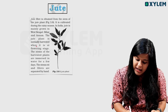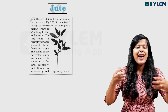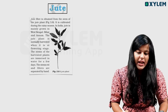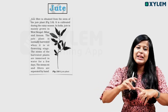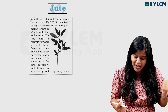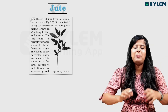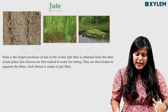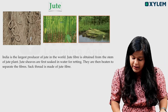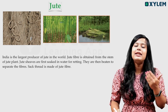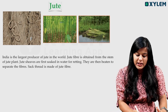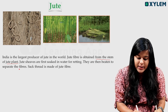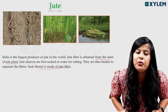The jute plant is normally harvested when it is at the flowering stage. At that stage, we harvest it. The stems of the harvested plants are immersed in water for a few days. The stem, root, and fiber are separated by hand. India is the largest producer of jute in the world. Jute sheaves are first soaked in water for retting, then they are beaten to separate the fiber.